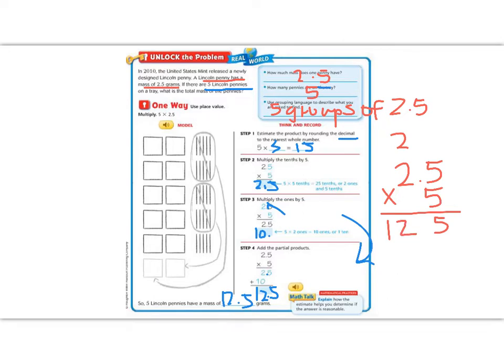But now my last step is if I have one decimal place here, then I'm going to count one decimal place in my answer. So I get the same answer of 12.5.